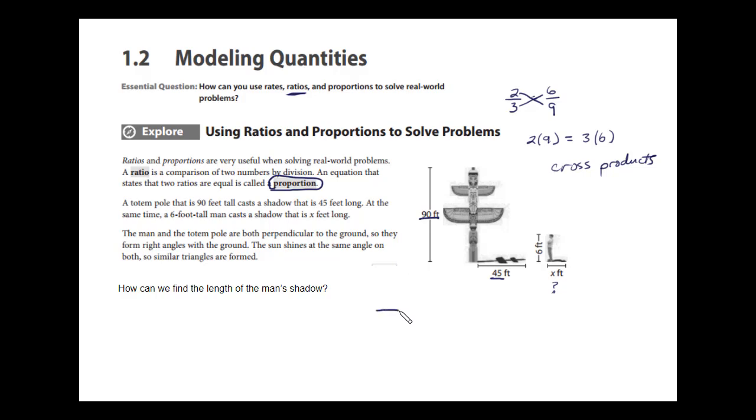We can set up a proportion. When something is 90 feet tall, it casts a shadow that's 45 feet. So this is height and this is shadow. Since this is tall and down here is shadow, then this should be tall and this should be shadow. The man was 6 feet tall and cast a shadow that was x. If I apply the rule of cross products, I multiply 90 times x, which is 90x, and that equals 6 times 45, which is 270. We end up with 90x equals 270, and dividing both sides, we get x is 3.